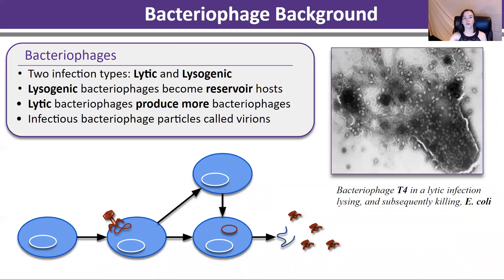There are two general infection pathways in a bacteriophage: lytic and lysogenic. In a lysogenic pathway, the bacteriophage effectively uses the bacteria as a reservoir host, in which case it will lie dormantly until an environmental stressor pushes it into a lytic cycle, at which point it will produce more and more bacteriophages inside of the bacteria until it lyses or breaks the cell wall of the bacteria, effectively killing it and releasing infectious bacteriophage particles, called virions, into the system.